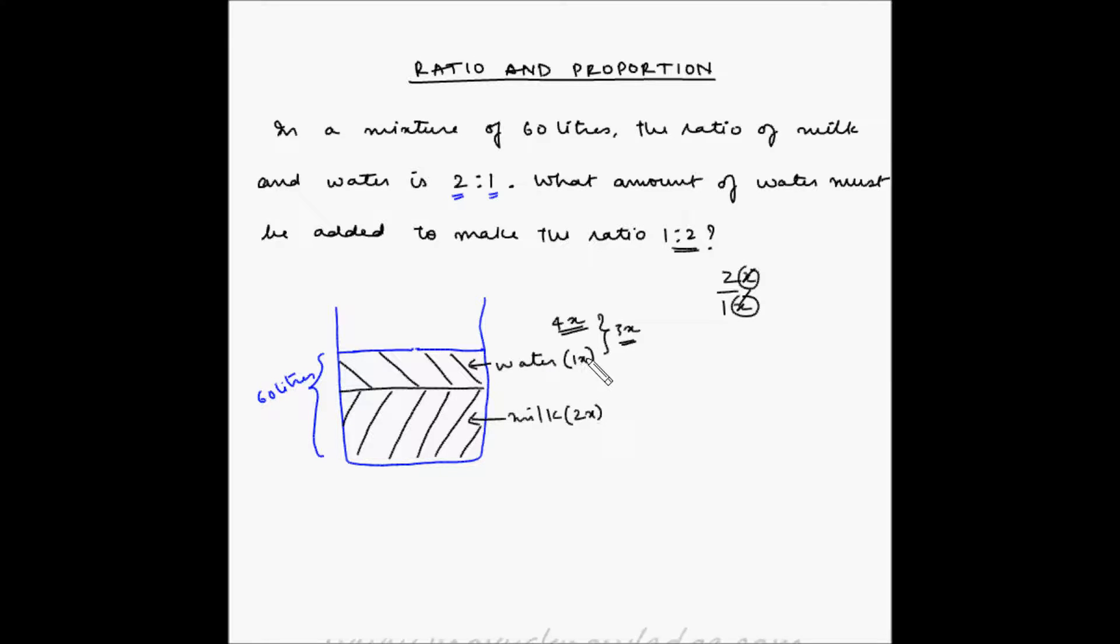So, let's find out what is x because once we find out what is x we will easily know how much water needs to be added. So, 2x plus 1x is equal to 60 because this total is 60 liters and water is 1x and milk is 2x. So, this becomes 3x is equal to 60 or x is equal to 20.